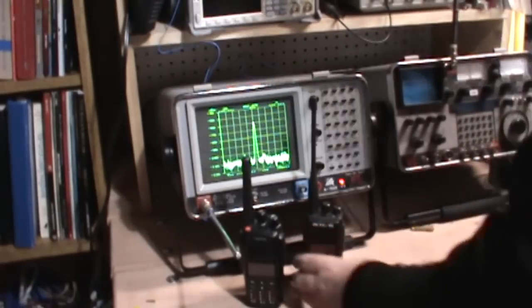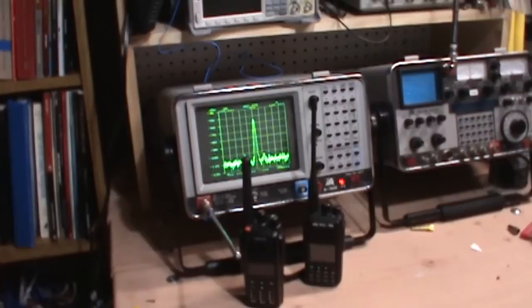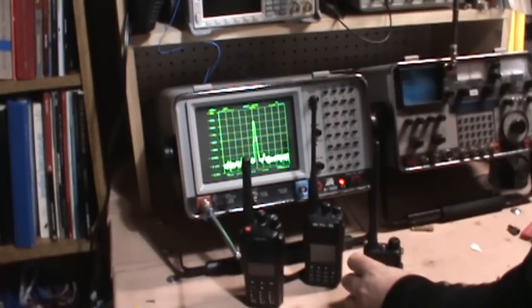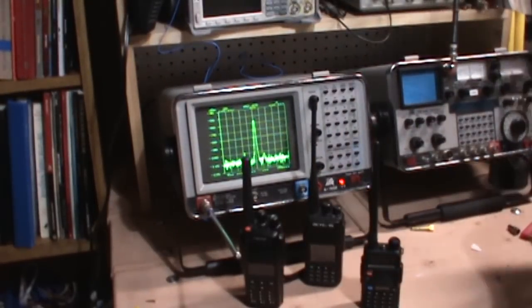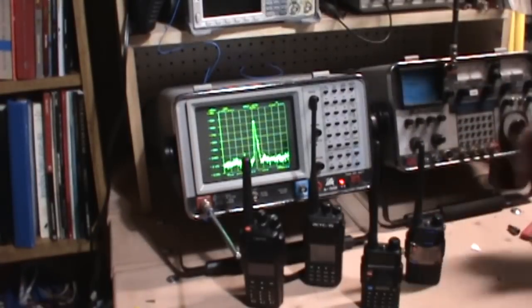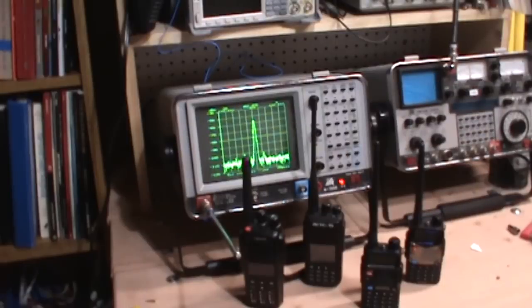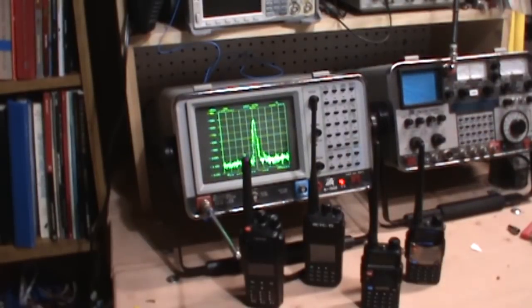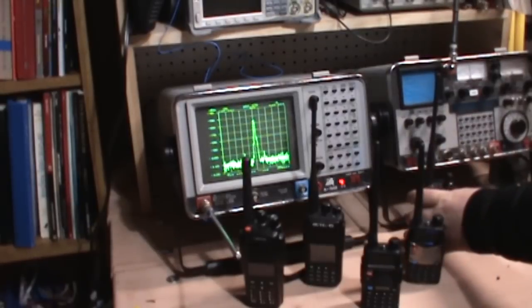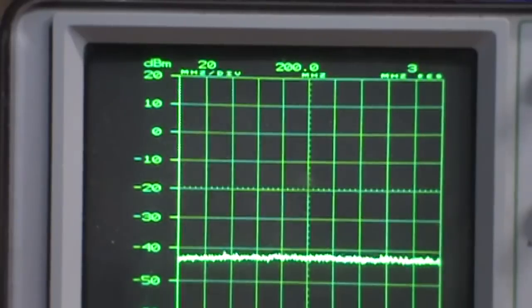A spectrum analyzer is a device that will show the signal strength based on frequency. We have one here today. This is an IFR A7550. It's a little bit of an older unit, but it still works and it'll be perfect for what we're going to do. So I got a bunch of HTs today. We're going to try them out and see what they look like. We'll go ahead and get started with our testing here.